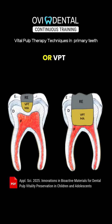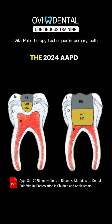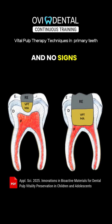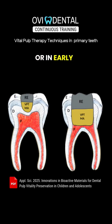Vital pulp therapy, or VPT, aims to maintain the health and function of the dental pulp following injury or carious exposure. The 2024 AIPD clinical practice guidelines emphasize that VPT is indicated for both primary teeth with a vital pulp and no signs of radicular pathology, and for immature permanent teeth with vital pulp regardless of whether pulpitis is reversible or in early stages of irreversible inflammation.